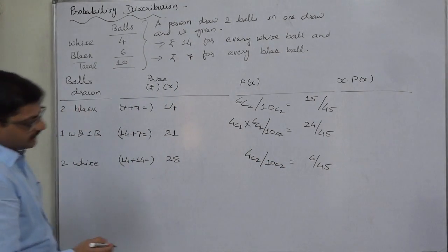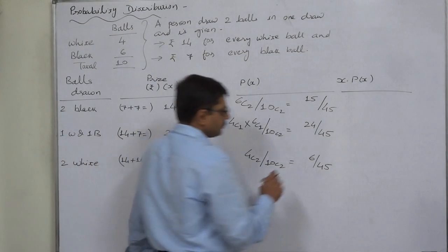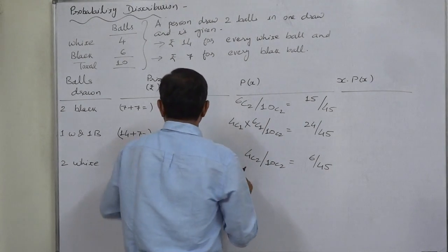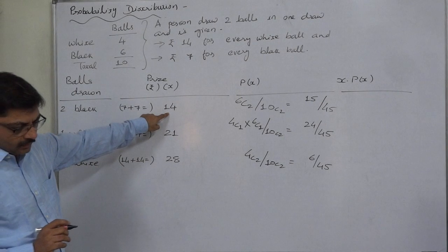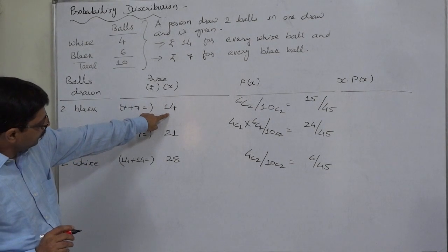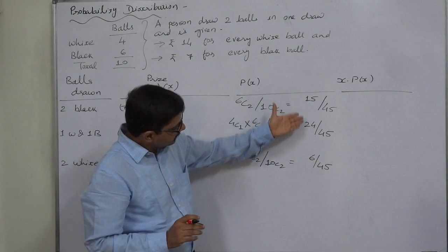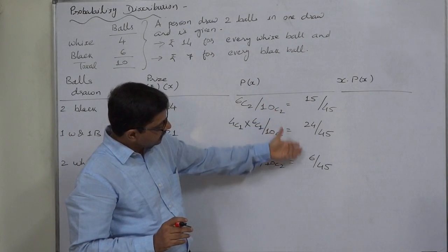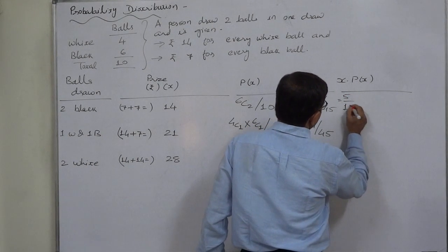So this is the correct probability distribution. Now we multiply X by P(X) so that we can have the value of E(X). All the three numerators are divisible by 3. We can simplify this as 5 by 15, 8 by 15, and 2 by 15 so that the product will be smaller.